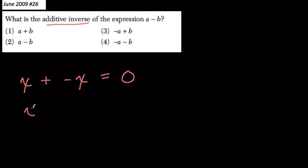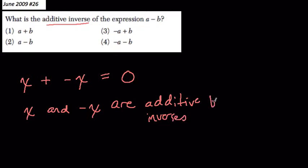So in other words, x and negative x are additive inverses for one reason really only. Because they add to zero.